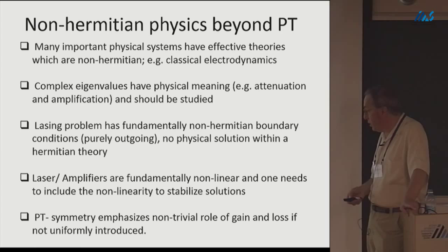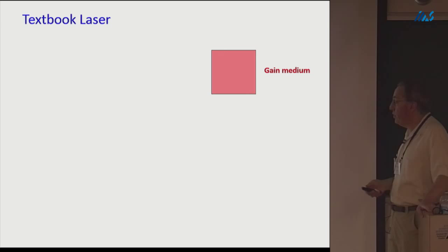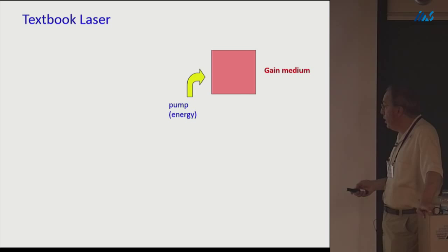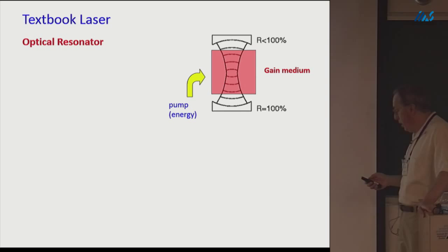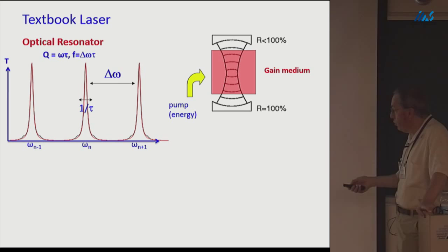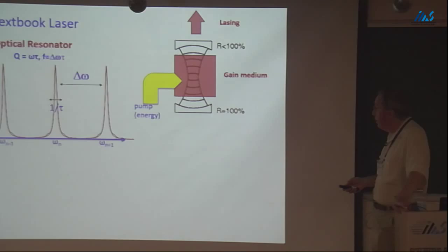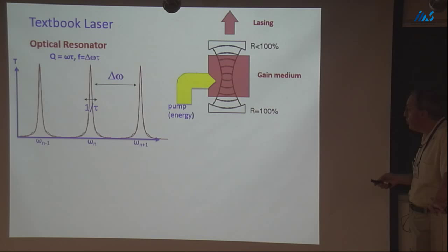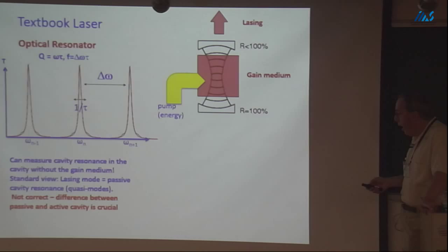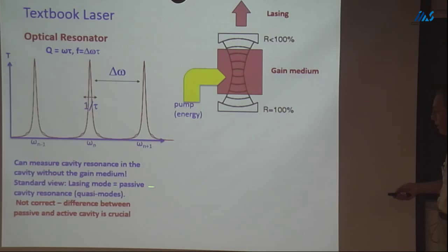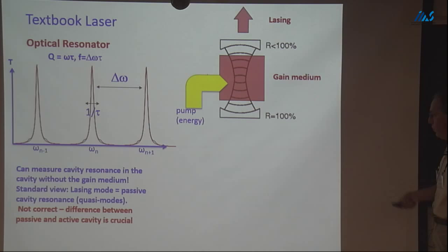In a textbook laser, you have some atomic or molecular gain medium into which you pump energy, and a resonator to trap the light — often a well-reflecting mirror and a less well-reflecting output mirror. As you increase the pump, this resonator has passive cavity resonances with width 1/τ and spacing Δω. You get a narrow focused beam of light out, often at more than one frequency. The standard view is that lasing is just the passive cavity resonance somehow boosted — this isn't correct, and that's one thing I want to emphasize.